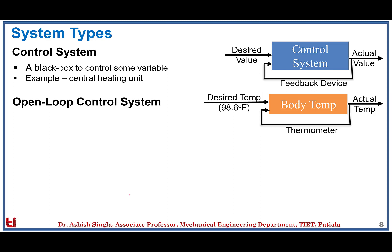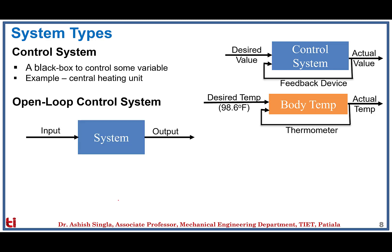The first category of control system is the open loop control system, where there is only input and output but no feedback device. This means the control system has no parameter to modify or improve the performance based on its output. Open loop control systems are still very popular because they are simple and extremely cheap, though a little inaccurate. For example, a thermometer senses and displays body temperature but has no measure to modify it.